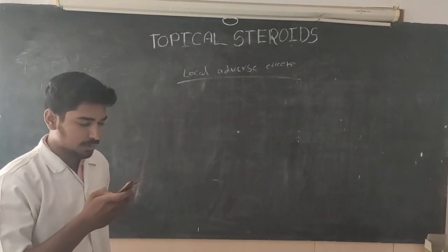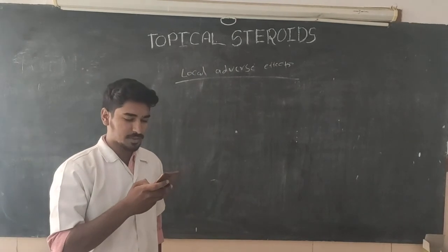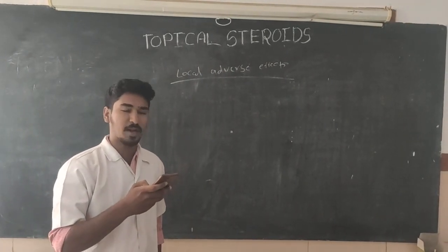Systemic adverse effects of topical steroids: adrenal-pituitary suppression can occur when large amounts are applied repeatedly over a large area of the body.